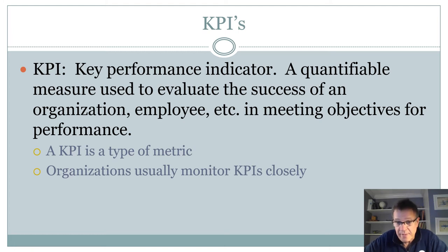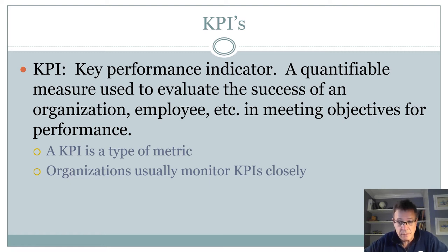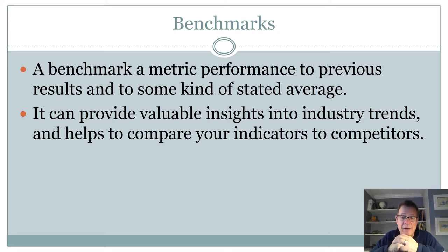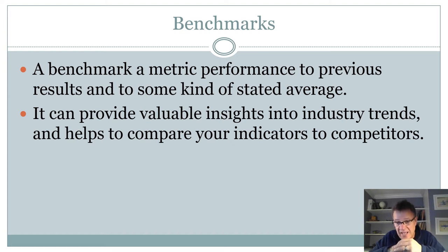A KPI is a form of a metric — a quantifiable measure used to evaluate the success of an organization in meeting a specific performance objective. KPIs are usually well-defined and monitored very closely. They are areas organizations spend a lot of time paying attention to. For example, you could have a KPI that deals with response times and turnaround times. If you are a computer hosting company, you may have a KPI stating your website must be up a certain percentage of time — you can't have more than a certain number of hours of downtime. If you exceed that, there may be a financial penalty if it's a contractual relationship.